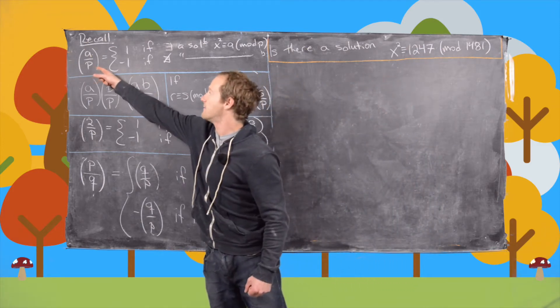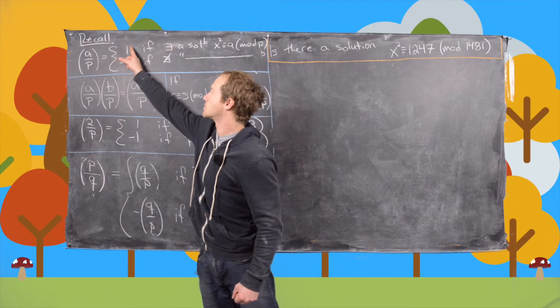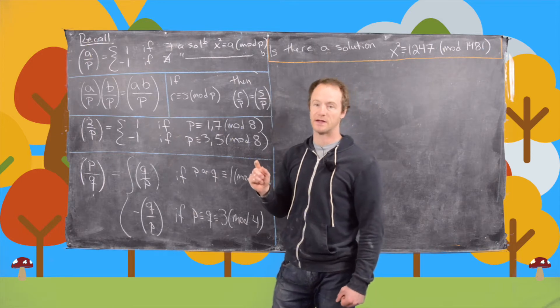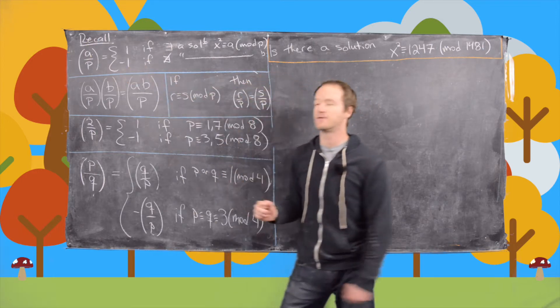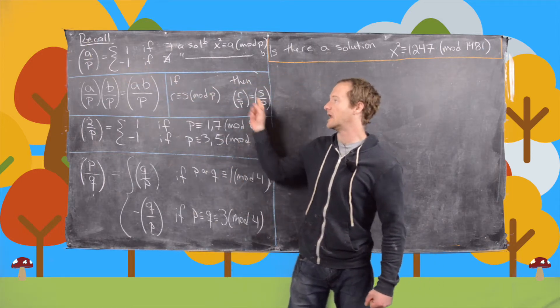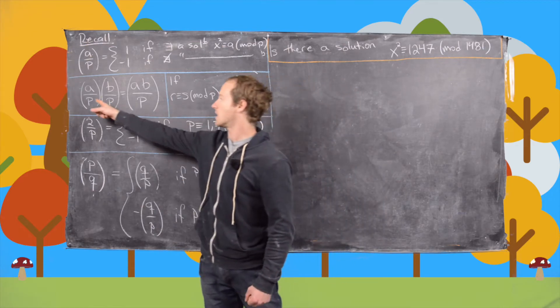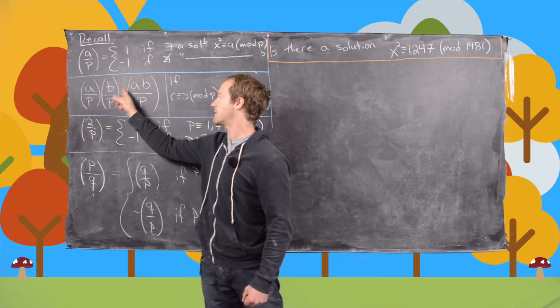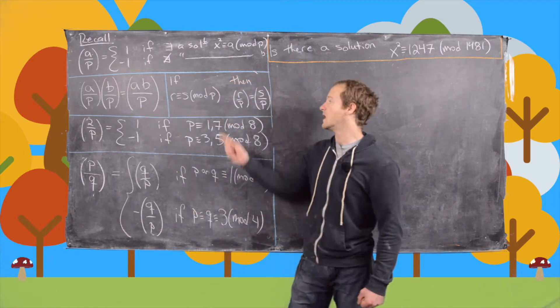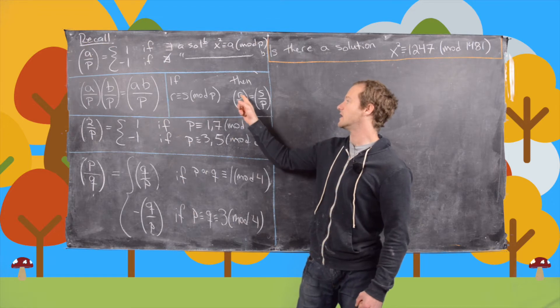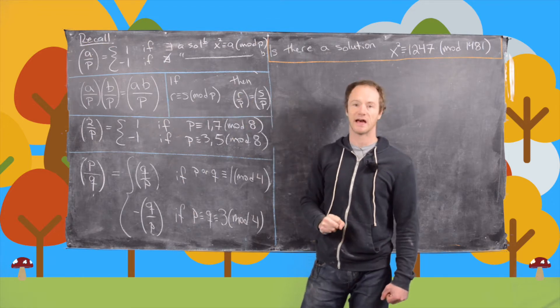We say a by p is equal to 1 if there is a solution to x squared congruent to a mod p, and it's equal to negative 1 if there's not a solution. And now we have these simple properties of this symbol. First of all, if you have a by p times b by p, you get ab by p. And then also if r is congruent to s mod p, then r by p is equal to s by p.